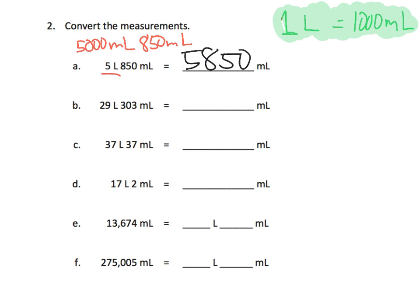Let's go down to D. It says 17 liters and then 2 milliliters, so start with that 17 liters. Well, 17 liters is going to give us 17,000 milliliters, because each of those liters is 1,000, so 17,000 plus we have the extra 2 right here, so we end up with 17,002 milliliters.